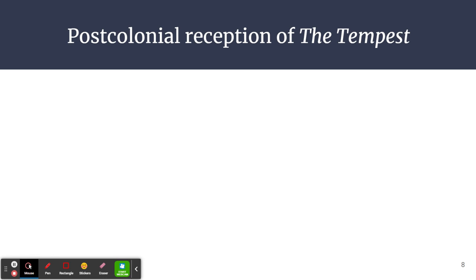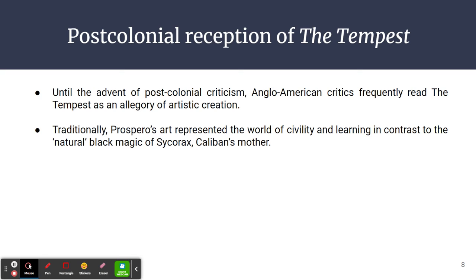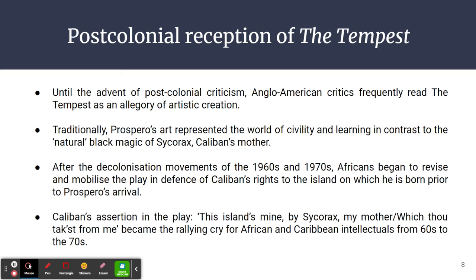This brings us to a very important issue — the post-colonial reception of The Tempest, which is also connected to the next unit of this course. Until the advent of post-colonial criticism, Anglo-American critics frequently read The Tempest as an allegory of artistic creation. Traditionally, Prospero's art represented the world of civility and learning in contrast to the so-called natural black magic of Sycorax, Caliban's mother. After the decolonization movements of the 1960s and 1970s, Africans began to revise and mobilize the play in defense of Caliban's rights to the island on which he was born prior to Prospero's arrival. Caliban's assertion, "This island's mine by Sycorax my mother, which thou takest from me," became the rallying cry for African and Caribbean intellectuals from the 60s to the 70s.